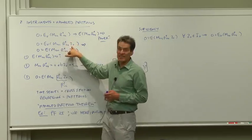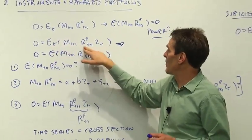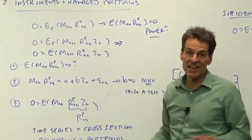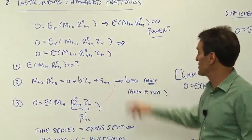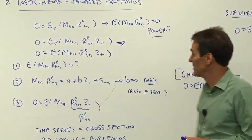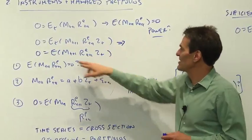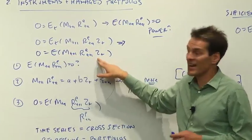If the agent sees z_t, then E_t(MR) times z_t, we can bring the z_t in and out. It's a constant from the information's point of view. It's in time t information, and then we can condition down to 0 equals E(MR times z_t).